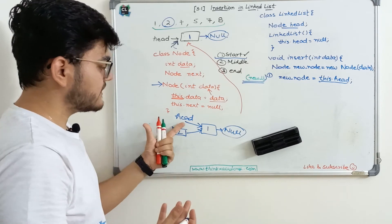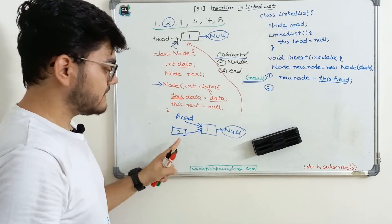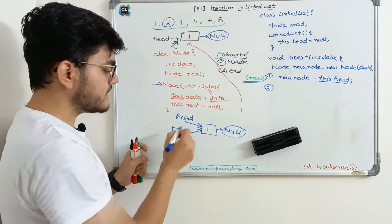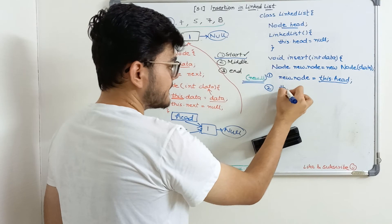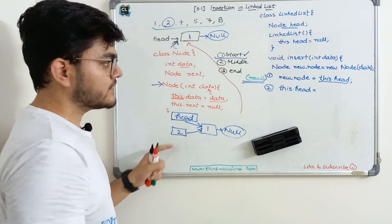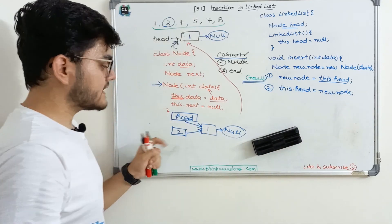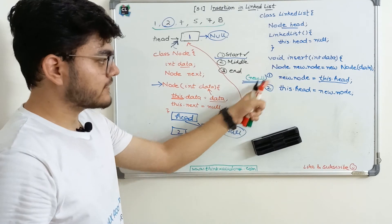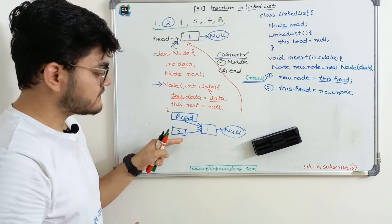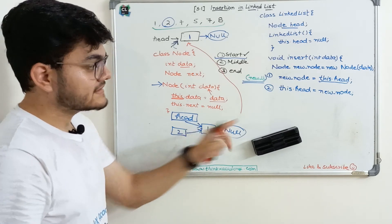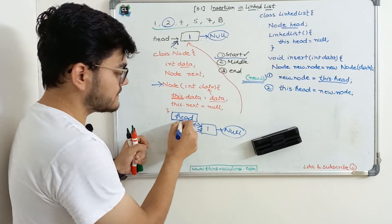The second step is to reassign head, because now the first element has changed. So we write 'this.head = new node'. These are the two important steps — object referencing. First, we reference the new object to point to the same position where head was pointing. The second step is to reassign head to the new node. Let's now move on to the Eclipse IDE and implement this program.